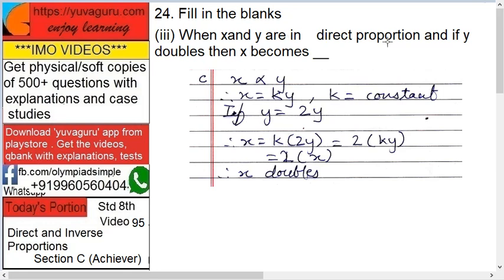Next, when X and Y are in indirect proportion and if Y doubles, then X becomes, here indirect means inverse. X and Y are in indirect proportion. Yeah sorry, the question is X and Y are in direct proportion and Y doubles, then X becomes.